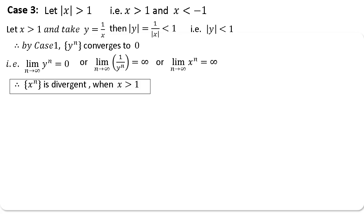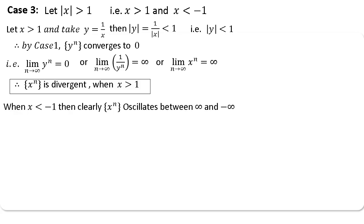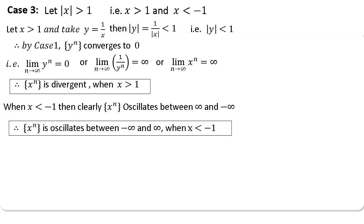When x < −1, you can take x = −p for some suitable p, and continue the analysis. You will find the sequence oscillates infinitely between +∞ and −∞ when x < −1.